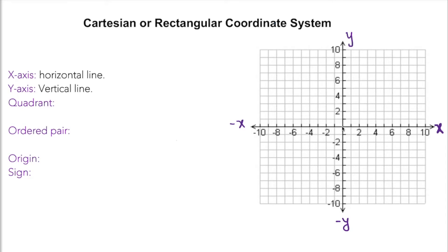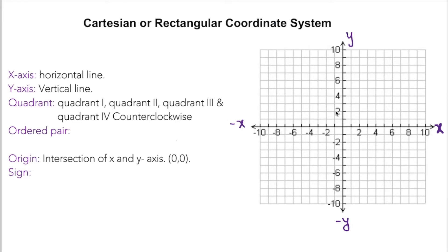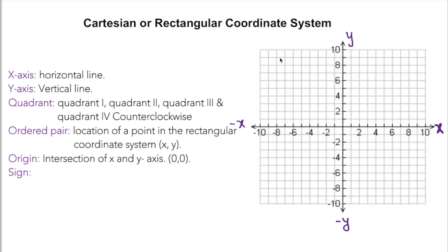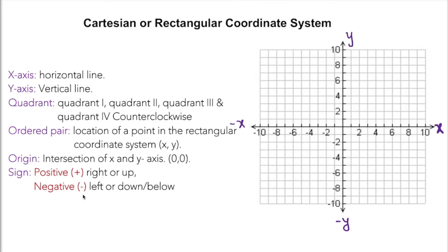When the x-axis and y-axis intersect, we call it the origin, and that is always (0, 0). This intersection creates four regions: quadrant one, quadrant two, quadrant three, and quadrant four — going counterclockwise. Every point in the coordinate system is called an ordered pair. An ordered pair is the location of a point in the rectangular coordinate system. The sign rule: positive means right or up; negative means left or down.